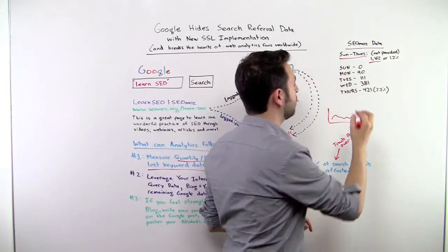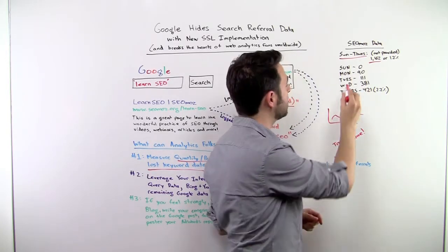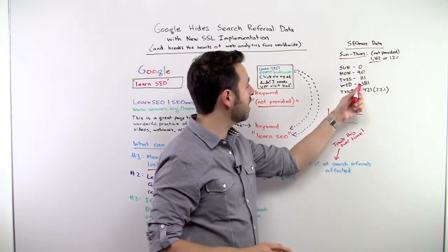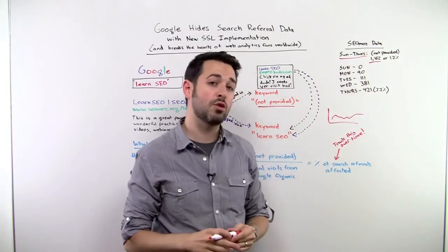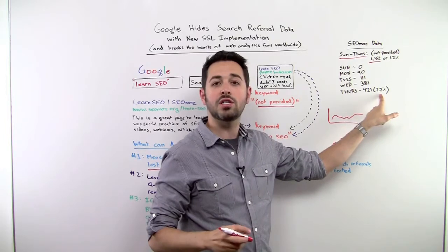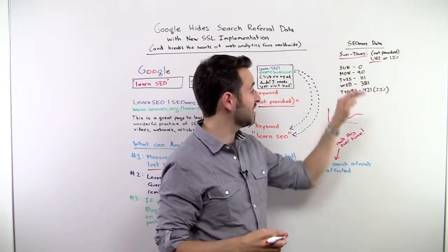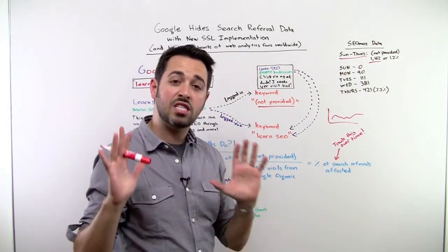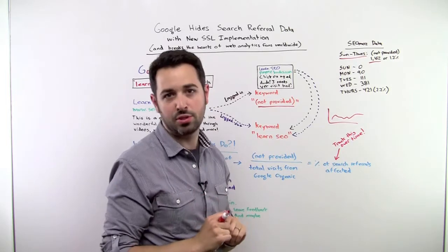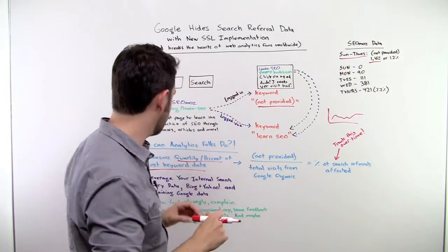However, the number is going up. As of Sunday, we had zero visits that did not contain any keyword data. Monday had 90, Tuesday had 111, Wednesday 381, Thursday 421. That is 2.2%. You can see that we've lost keyword information at about 2%, a little over 2% of our visits and climbing. This is frustrating. Google has said that they expect this will be less than 10% for most websites. We hope to continue to get 90% of the data.